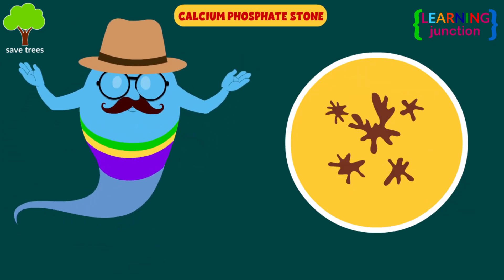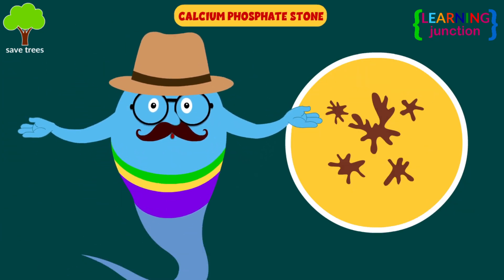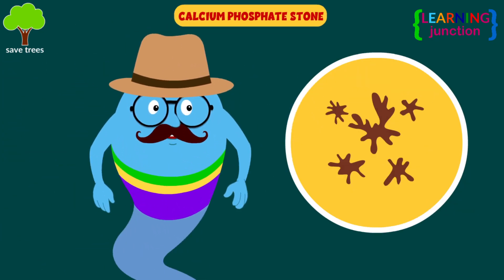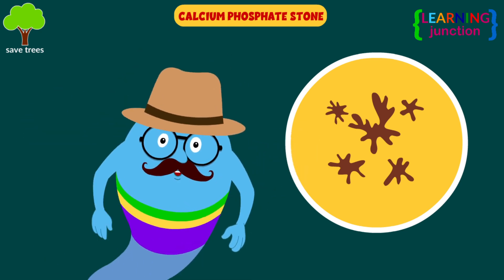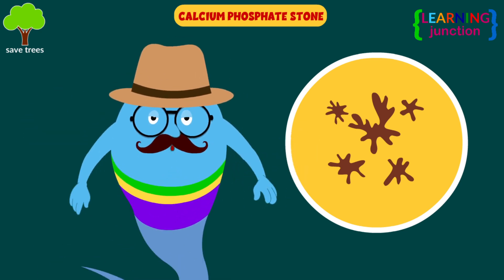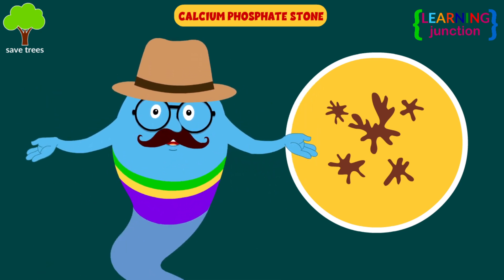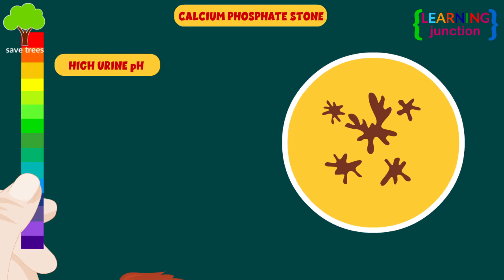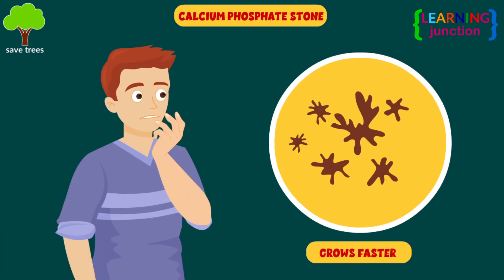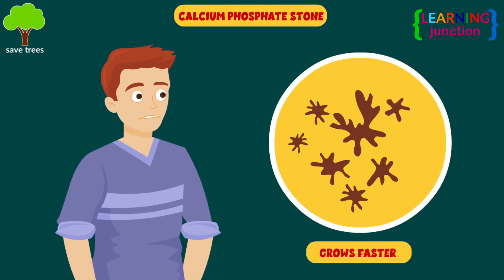Calcium phosphate stones: the cause is often obscure but most often related to a high urine pH. They can grow faster and larger than calcium oxalate stones.